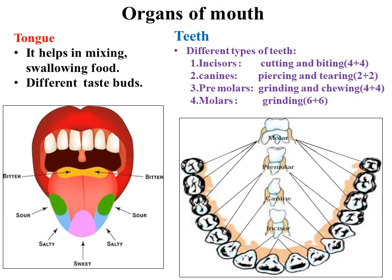There are mainly two organs present in our mouth. First is the tongue, which helps in mixing and swallowing the food. It has different taste buds: the front part of the tongue has taste buds responsible for the taste of sweet; the lateral portions on both sides are for salty and sour; and the posterior portion of the tongue is responsible for the taste of bitter.